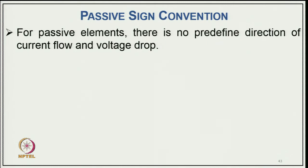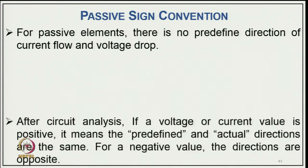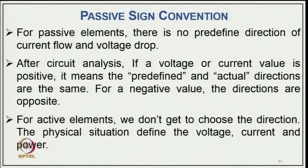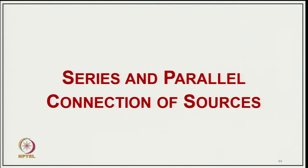For passive elements, there is no predefined direction of current flow or voltage drop. After circuit analysis, if a voltage or current value is positive, the predefined and actual directions are the same; for a negative value, the directions are exactly opposite. For active elements, the physical situation defines the voltage, current, and power.